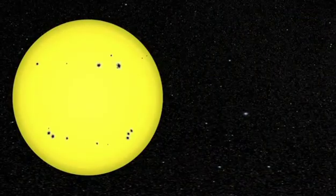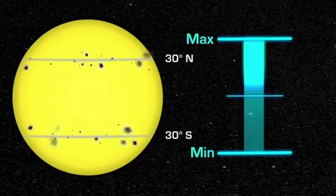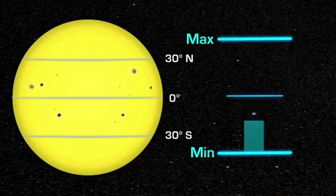During this cycle, the location of the sunspots also changes. They are at middle latitudes during solar maximum and move closer to the equator as the Sun approaches solar minimum.